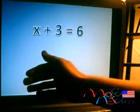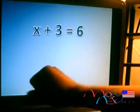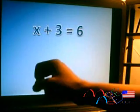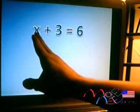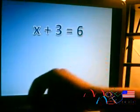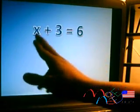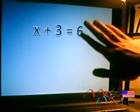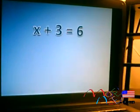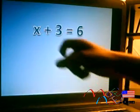x plus 3 equals 6. First thing you have to understand is what this is asking you to do. It is asking you to find what value of x makes this equation true. So to do that, you want to see the end result say x equals some number. So, let's get rid of this 3 from this side.